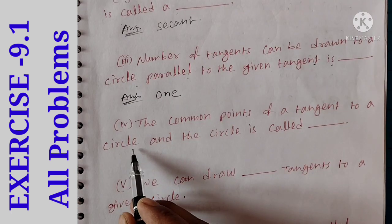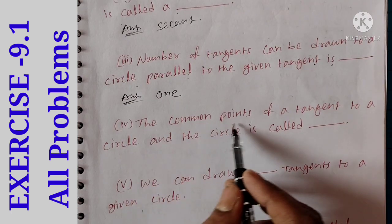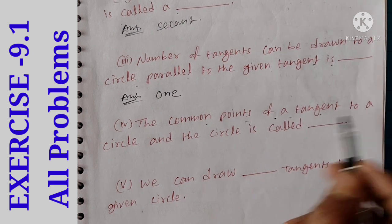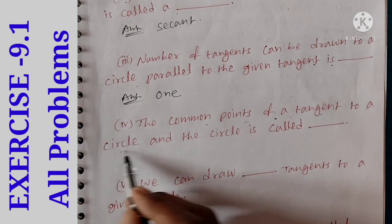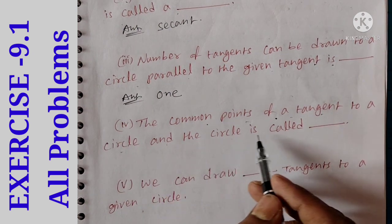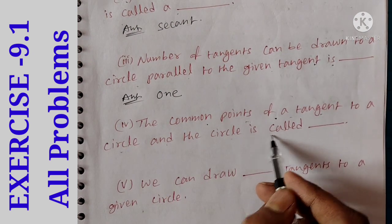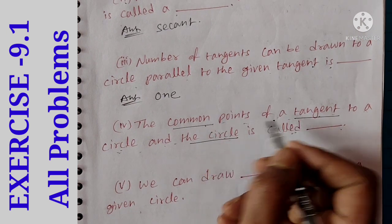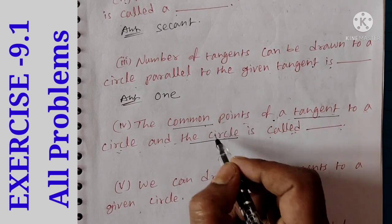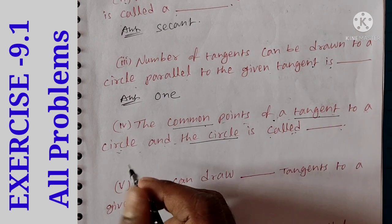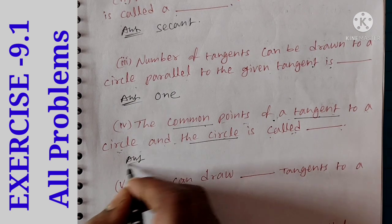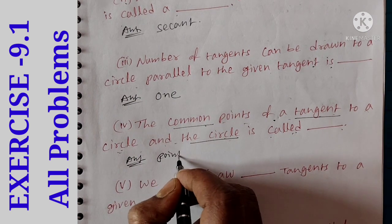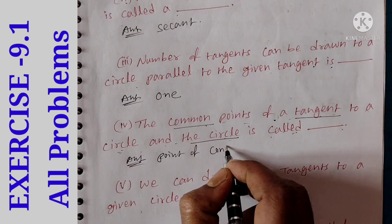Next, fourth point: the common point of a tangent to a circle and the circle is called what? The common point of the tangent and circle is called the point of contact.